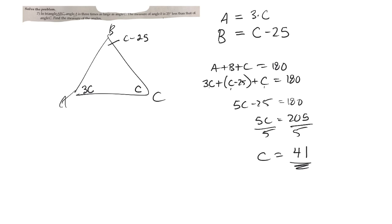So C is 41, then I can go back here and say well A is 3C or 3 times 41 so that would be 123, and then B is C minus 25 so 41 minus 25 or 16.